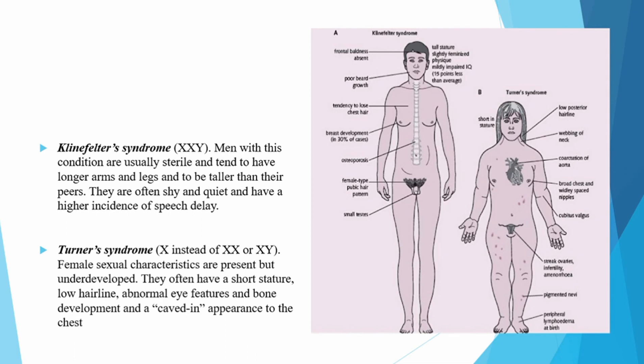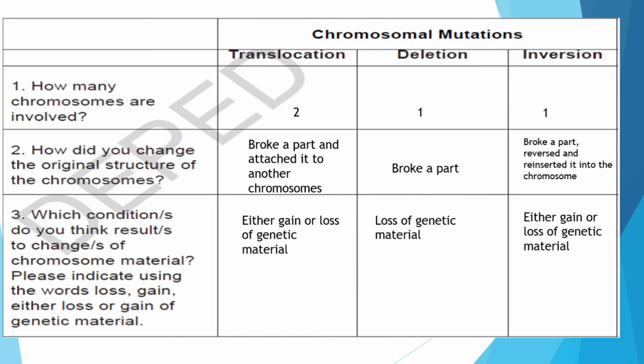Turner's syndrome: female sexual characteristics are present but underdeveloped. They often have short stature, low hairline, abnormal eye features and bone development, and a cave-in appearance to the chest. Here we have chromosomal mutations like translocation, deletion, and inversion.